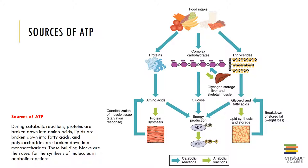Amino acids are used to increase the number of myofibrils. If the digestive tract, adipocytes, and liver are unable to maintain normal nutrient levels, the contractile proteins can be broken down and amino acids are released into the circulation for use by other tissues. So you can see that there are many sources of ATP that can be found within the body.